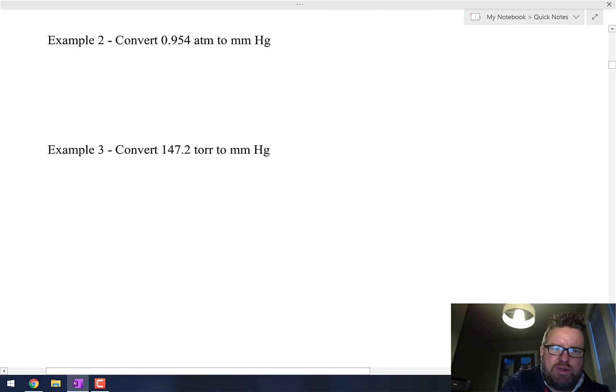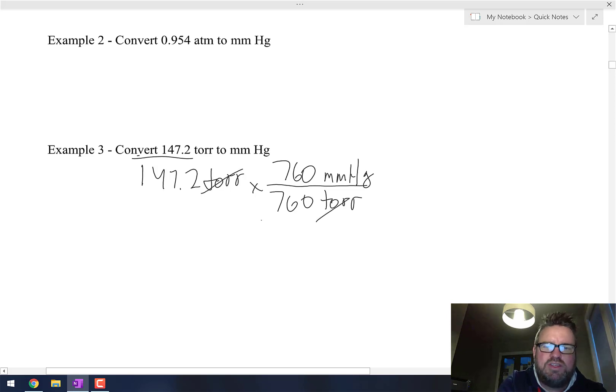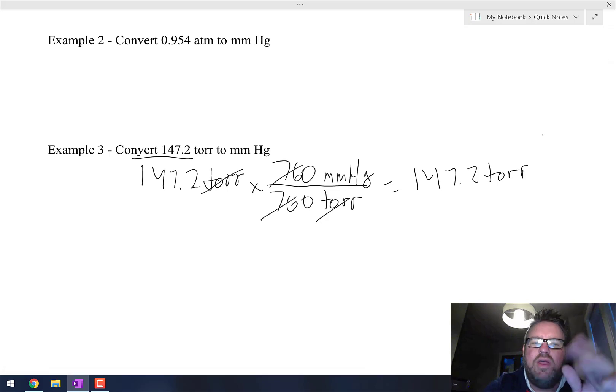Anytime you're going from millimeters of mercury to torr or from torr to millimeters of mercury, it's just the same thing. Look at example three here: 147.2 torr to convert that to millimeters of mercury. Notice I go 760 torr equals 760 millimeters of mercury. The torr cancel, so the 760s, the answer is 147.2 torr.